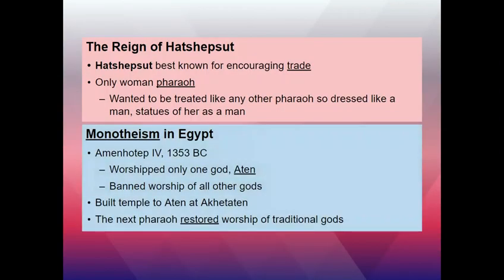One important figure to discuss is Hatshepsut — a female pharaoh, recognized as one of the very few because she had documentation and clear proof of her rule. This was very uncommon in ancient times when women were largely seen as property. She wanted to be treated like a man, so in her statues she is depicted with male features and male clothing so that people would respect her as a ruler.